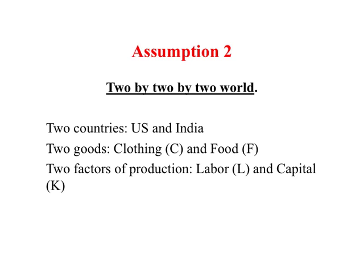To produce these two goods, two factors of production are required. One is labor, designated by L, and the second factor of production is capital, represented by the letter K. So two countries, two goods, and two factors of production. This is the minimum we require to understand international trade, because we need at least two commodities — one to be exported and the other to be imported — and two countries, since you produce something and sell it to another country.